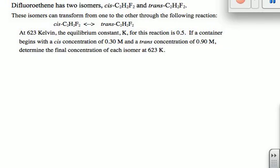So this is another ICE chart problem, but it's a little more complicated than our last one. We'll start by writing our reaction. I'm just going to write cis and trans because that's ultimately the same chemical. They're just different forms of it. They're isomers of each other.